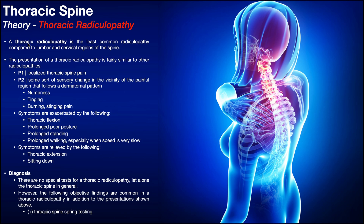A thoracic radiculopathy is going to have a presentation similar to that of the other radiculopathies. With a lumbar radiculopathy, they generally have some low back pain but also radiating symptoms down one or both legs. The same is true of a thoracic radiculopathy. P1 is some sort of localized thoracic spine pain, and that pain could theoretically occur anywhere along the thoracic spine.